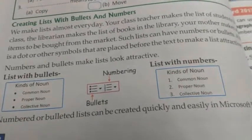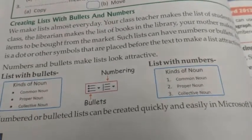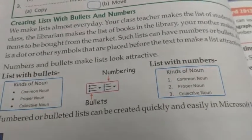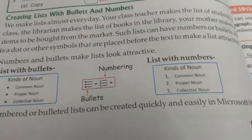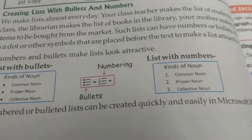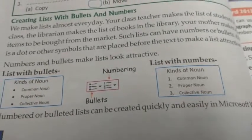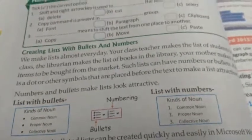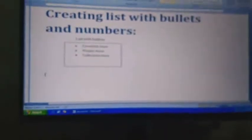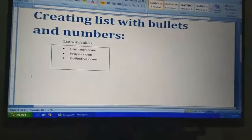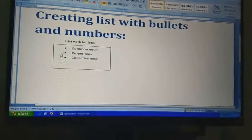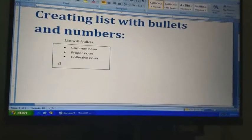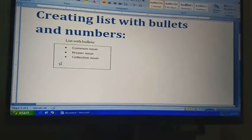In a practical example, I will show you how to make or create a listed document with bullets or numbering. Let us see the way we can do bullets and numbering. What is a bullet? A bullet is a dot or any other symbol that is placed before the text to make a list attractive.